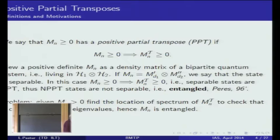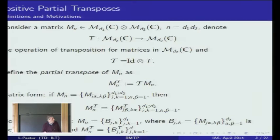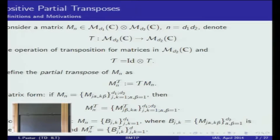Let's consider the matrix that belongs to the tensor product of two matrix algebras with dimensions d1 and d2, and define the operation denoted by T — the transposition of matrices from the second factor. We lift this operation to the whole tensor product as identity on the first factor and transposition on the second. The new matrix obtained by applying this map is called the partial transpose.